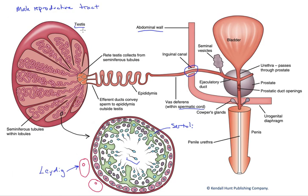The testis itself is actually a compartmentalized system of very small convoluted tubules known as the seminiferous tubules. This is where spermatogenesis takes place — the production of sperm. There is more than a half mile of collective length of these seminiferous tubules, hugely long and convoluted, producing sperm continuously such that hundreds of millions of sperm are produced per day over the course of the adult lifespan.